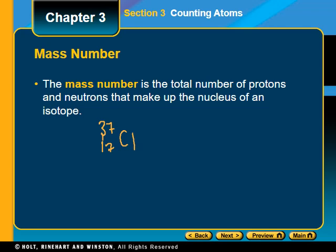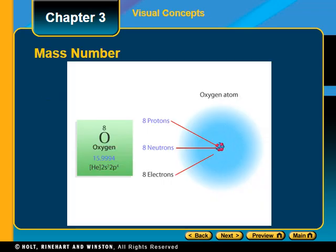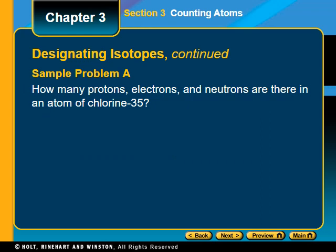Here is the nuclide symbol for chlorine, and this would be a different isotope of chlorine. Notice it's the same element — same number of protons — but a different mass number at the top. If they do not give you the mass number, you can take the atomic mass from the periodic table and round it to the nearest whole number, like rounding 15.99. For chlorine-35, the number after the dash is the mass number, so it goes on top. Use the periodic table to find the atomic number for chlorine.